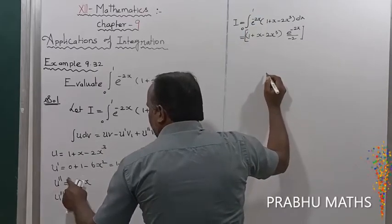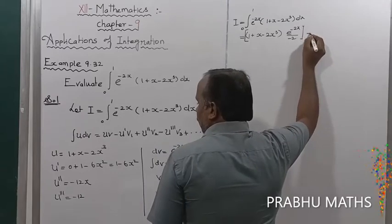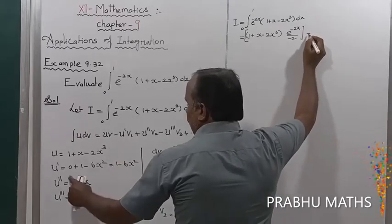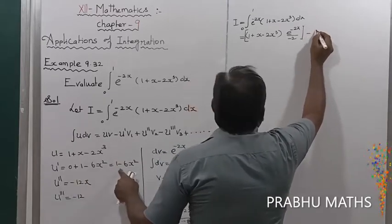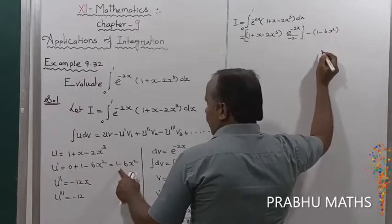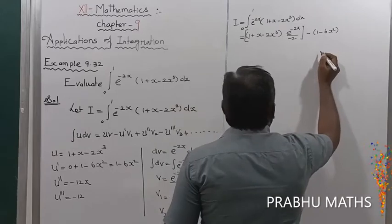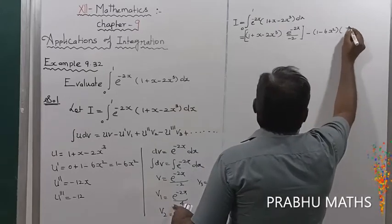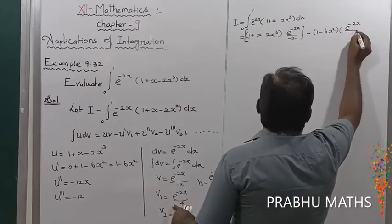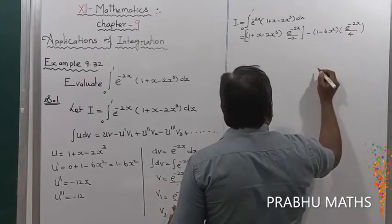Next, u' = 1 - 6x², multiplied by v₁ = e^(-2x) / 4. Then the next term involves u'' = -12x, multiplied by v₂ = e^(-2x) / (-8).